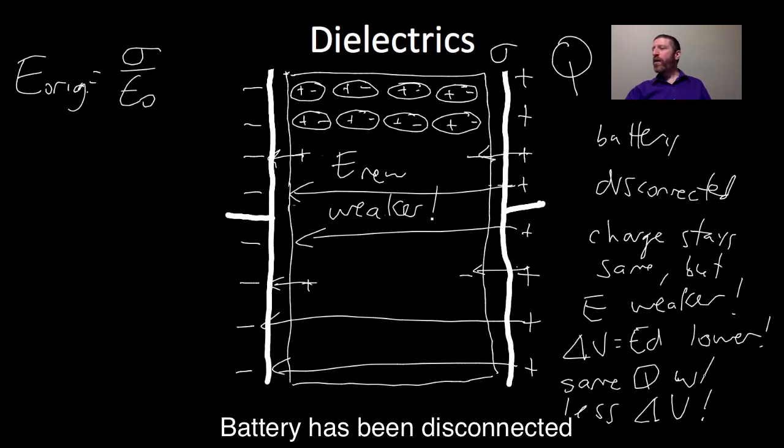Now, how much does that field change? Well, this dielectric has a factor called kappa, the dielectric constant kappa. We'll get to that in a minute. But what this means is anytime you see epsilon naught, that turns into kappa times epsilon naught, changing the permittivity. So E new will be sigma over kappa. That's a kappa, not a K. Kappa epsilon naught.